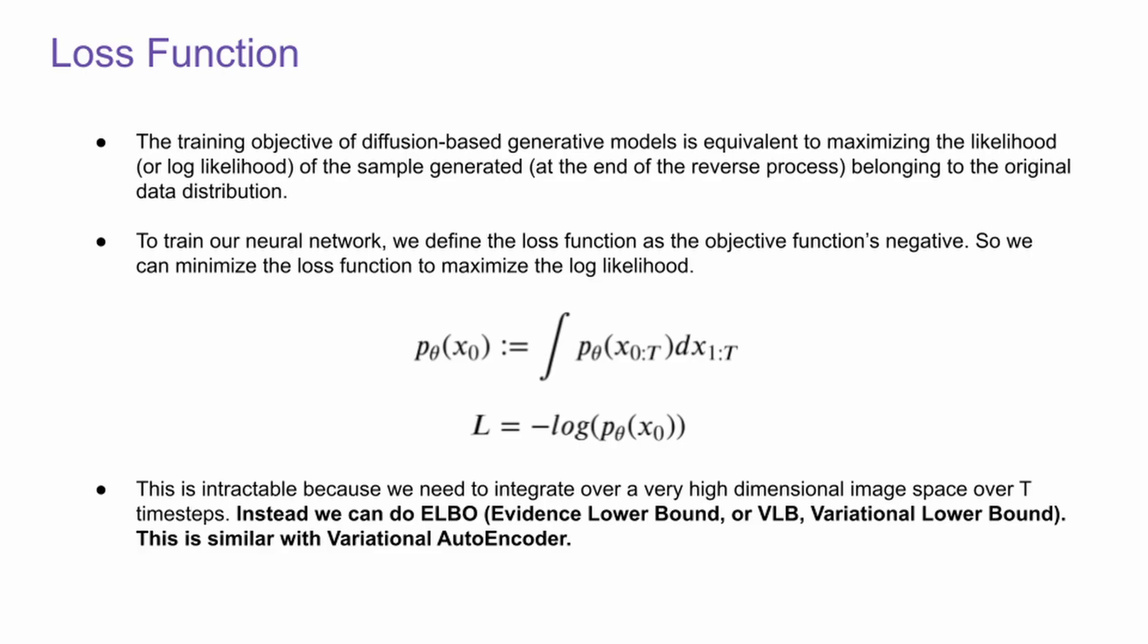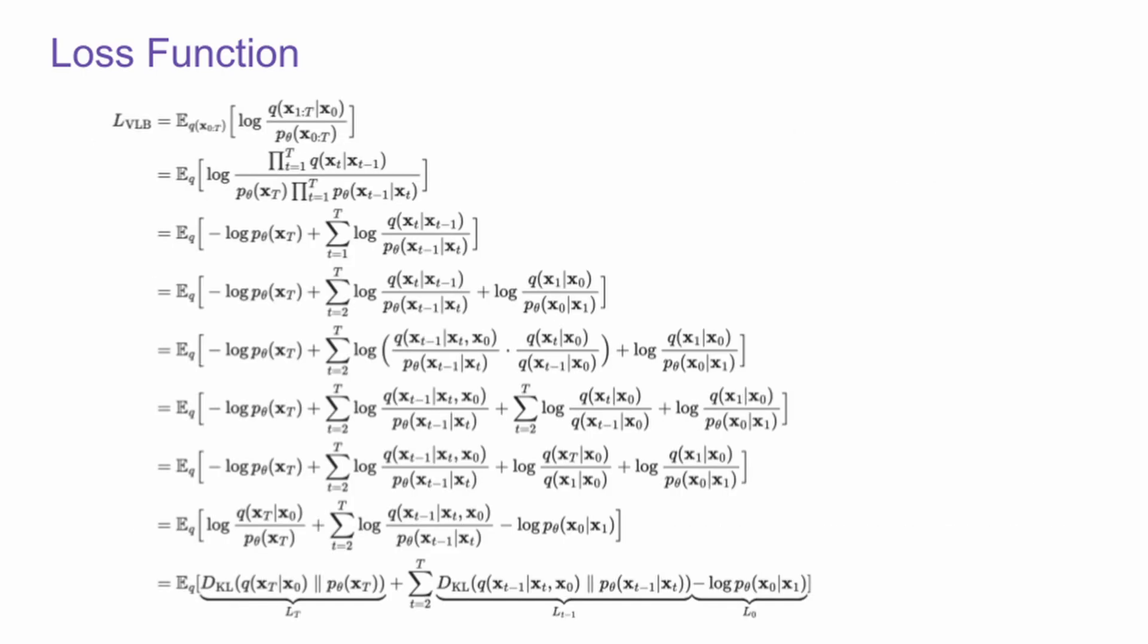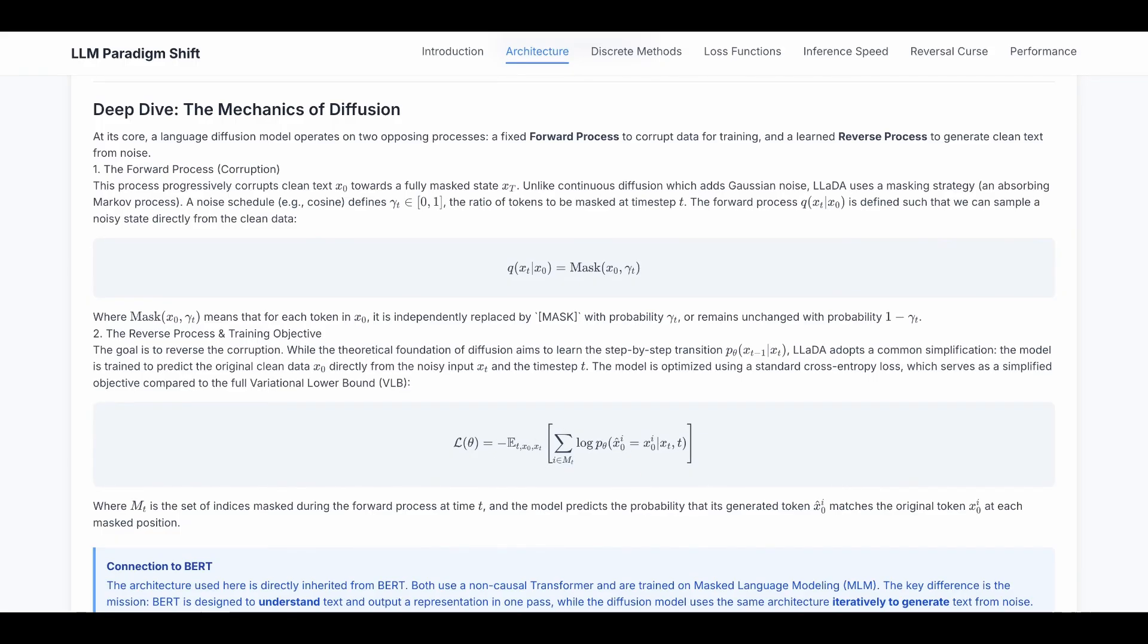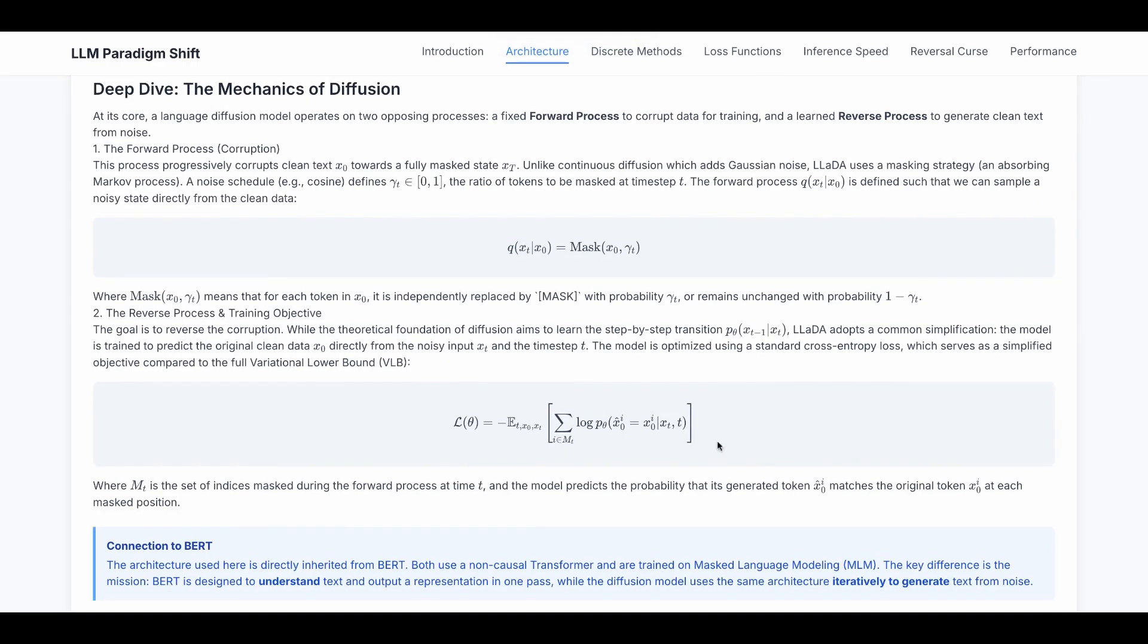The detailed deduction is right here. Take a look if you're interested. Now let's get back to the deep dive. Since LADA is using masked language model, our loss function is a standard cross entropy loss instead of the simplified MSE where the image diffusion is using. In this loss function, data represents all the states of the model, and Mt is the set of indices masked during the forward process at time t. And the model predicts the probability that its generated token x0_hat_i matches the original token x0_i at each mask position.